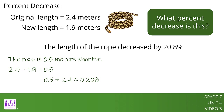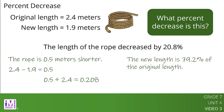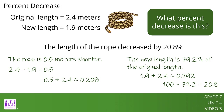We could also find that the rope's new length is 79.2% of the original length, because 1.9 divided by 2.4 is about 0.792. This means the length decreased by 20.8%, because 100 minus 79.2 equals 20.8%.